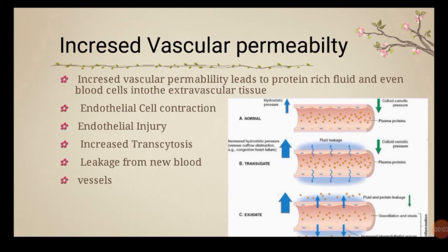Transcytosis increases when a mediator such as vascular endothelial growth factor (VEGF), which helps in vessel proliferation, binds to receptors on the vessel wall, increasing transcytosis. The fourth mechanism is leakage from new blood vessels — newly formed blood vessels are leaky until they mature and form intracellular junctions. Newly formed vessels are also more responsive to mediators like VEGF, making them leakier.